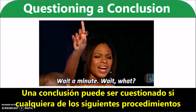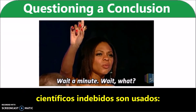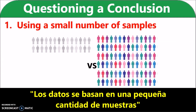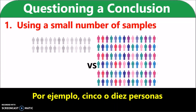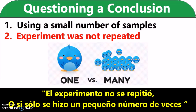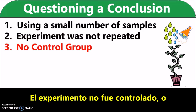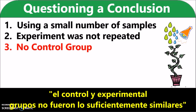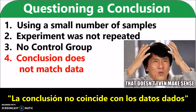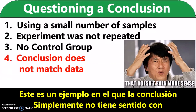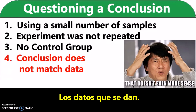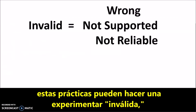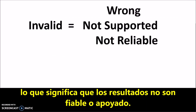A conclusion can be questioned if any of the following improper scientific procedures are used: the data is based on a small amount of samples, such as five or ten people; the experiment was not repeated, or it was only done a small number of times; the experiment was not controlled, or the control and experimental groups were not similar enough; or the conclusion does not match the data given. These practices can make an experiment invalid, meaning that the results are not reliable or supported.